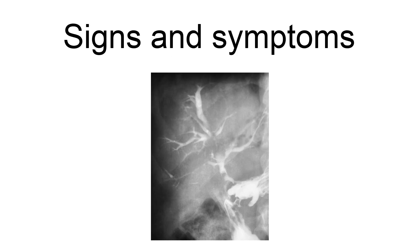A biliary fistula often occurs and may be suspected in a person who has recently undergone a surgical procedure. Pain may occur if the leaked bile is also infected, which can subsequently lead to biliary peritonitis. Extensive ascites may accumulate, especially in the setting of sterile bile leakage, which is often asymptomatic in nature.